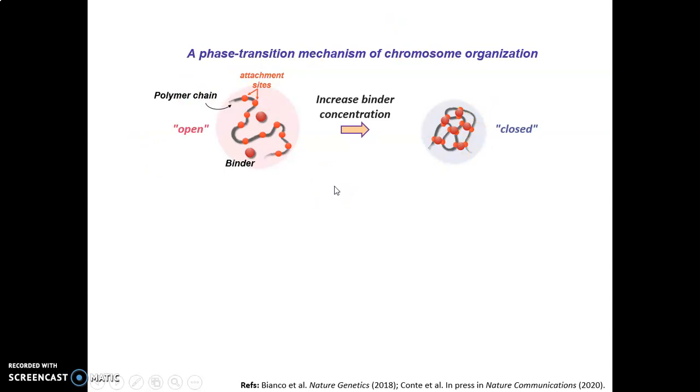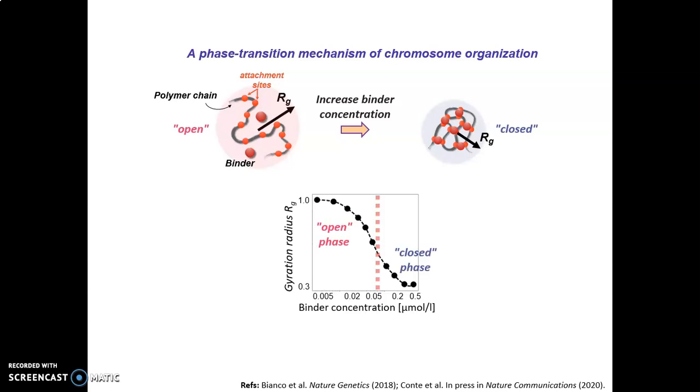We can take as the order parameter of this phase transition a quantity known in classical polymer physics, named gyration radius, Rg, that is the radius of a sphere roughly enclosing the volume of the polymer. If we increase binder concentration, there is a sharp drop in the gyration radius, because the polymer is folding in a more compact conformation until a plateau equilibrium value is reached.